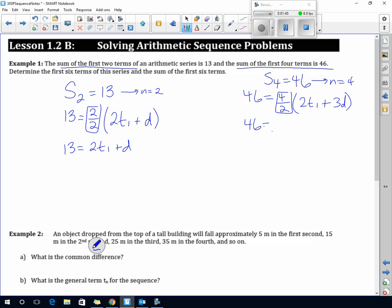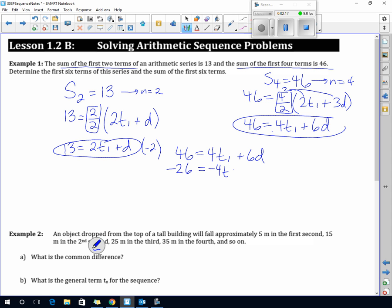Now from grade 10, we have two equations, two unknowns. The easiest way to solve this is elimination. If I multiply this second one by negative 2, I get negative 26 equals negative 4T1 minus 2D. Elimination works because when you add, it eliminates one of the variables, and we get 20 equals 4D, so D equals 5.